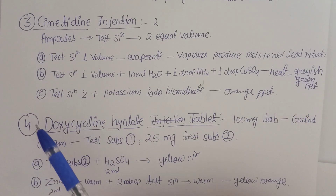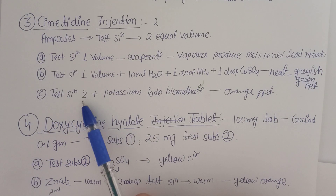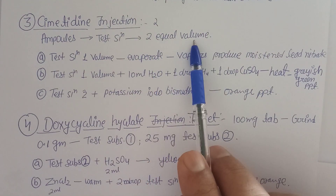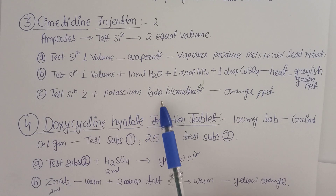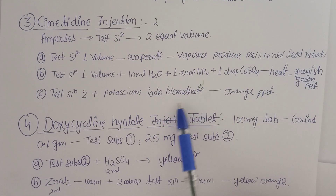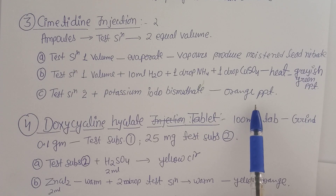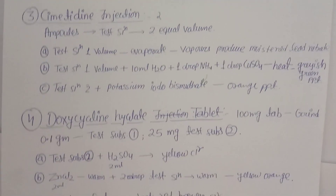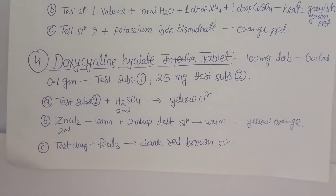Third test for cimetidine: to Test Solution 2, add potassium iodobismuthate. An orange precipitate is observed, confirming the presence of cimetidine in the given injection sample.